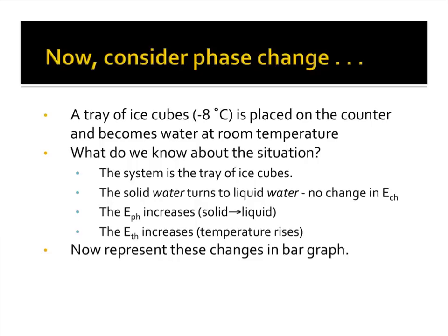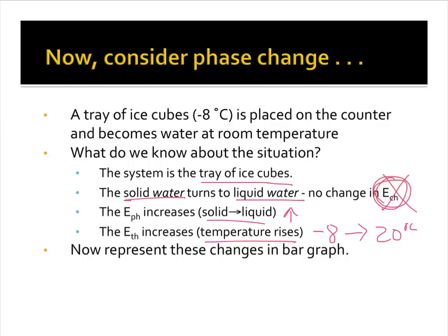Here's another example: a tray of ice cubes at negative eight degrees Celsius is placed on the counter and becomes water at room temperature. Our system is the tray of ice cubes. We have solid water going to liquid water, so chemical energy is not involved. Phase energy increases from solid to liquid, and thermal energy increases from negative eight degrees up to around 20 degrees Celsius.